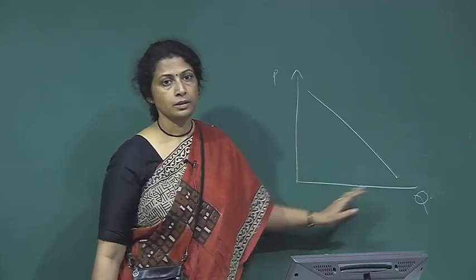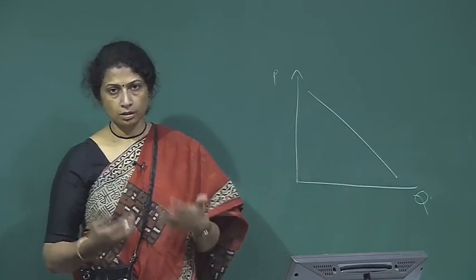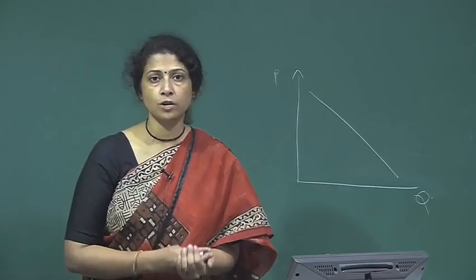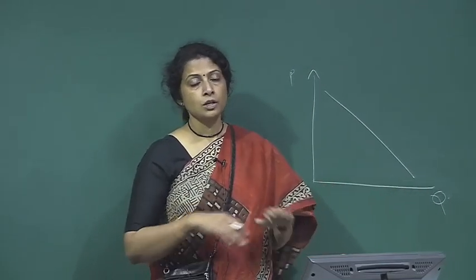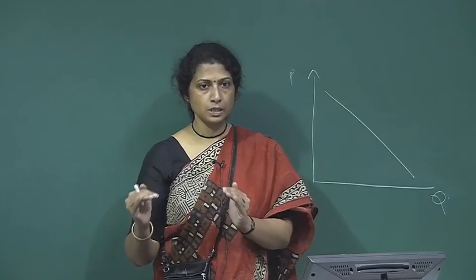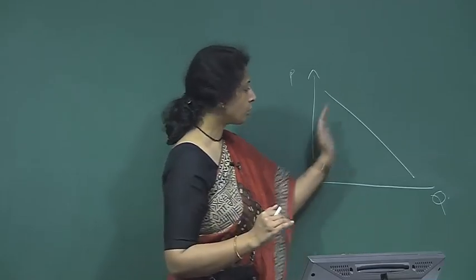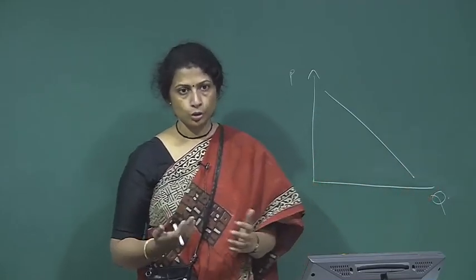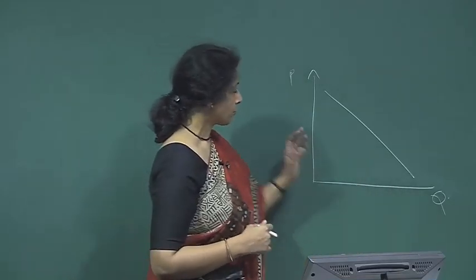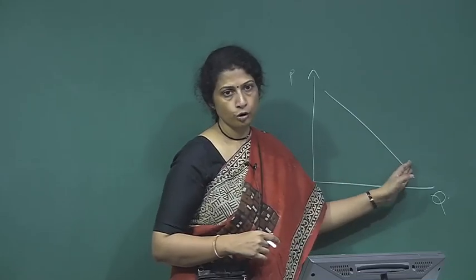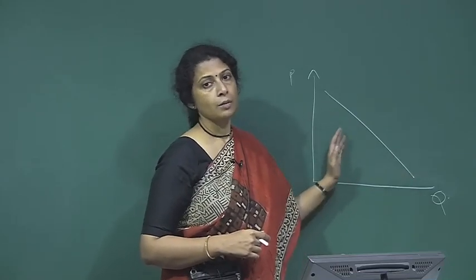'Other things remaining same' means the price of other products — say frozen desserts, cold drinks, or other alternatives of ice cream — are held constant, people's tastes are the same, and the weather is the same. Given all these variables constant, how does a change in price change my demand for a good? If the price of ice cream falls, I am going to demand more; if the price increases, I am going to demand less.